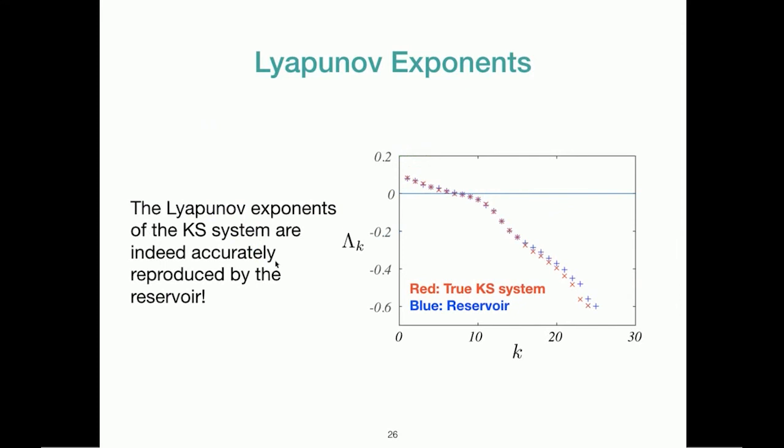So to conclude, the Lyapunov exponents of the chaotic system are indeed accurately reproduced by the reservoir. And this is, as I pointed earlier, this is a 15-dimensional attractor. It's a high-dimensional chaotic system, and we are able to get a lot of the positive and negative Lyapunov exponents just by looking at some training data.